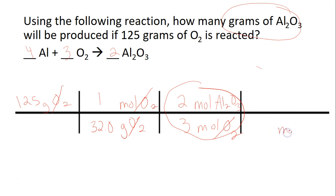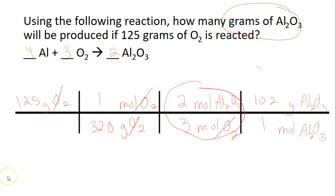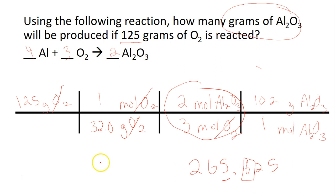But we want grams, so we go one more step: moles of Al2O3 to grams of Al2O3. We look up the mass on the periodic table — that mass is 102. Then we multiply the top and divide by the bottom, and the answer is 265.625. We round to significant figures — we've got 3 here, and because that last digit is 6, our final answer is 266 grams of Al2O3.